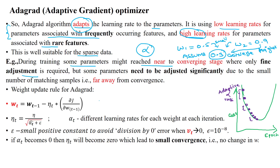The weight update rule is: the new weight w_t is updated with the previous weight w_{t-1} minus eta_t times the gradient of the error with respect to w_{t-1}. We calculate the gradient using the previous weight to determine the new weight parameter. Here, eta_t represents a different learning rate — a different learning rate for each weight at each iteration.